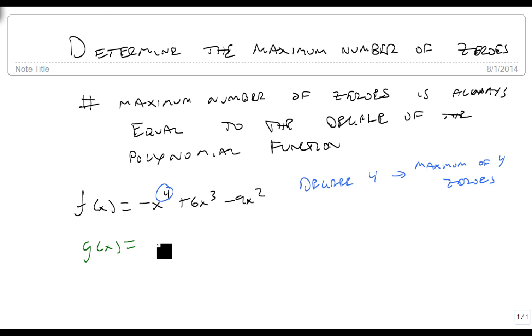If g(x) = x^2(x+1)(x-2), this one's harder because it's in factored form, not in polynomial form. What we need to do instead is just count the number of x's that we see with their power. So there's two x's here, there's one x here, and there's one x here. This also happens to be degree four, so there's also a maximum of four zeros.